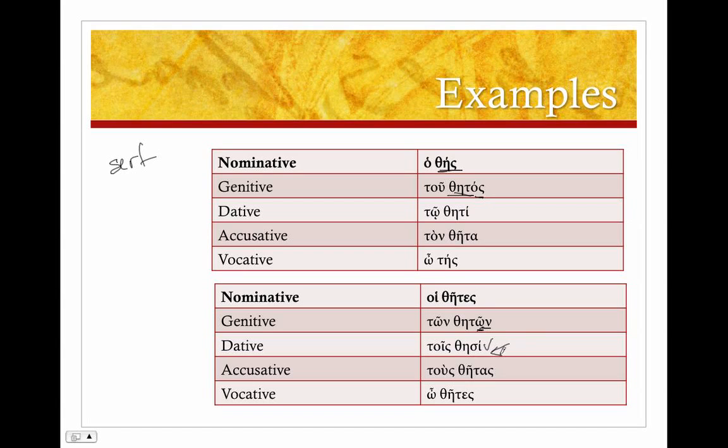So, again, the dative plural, the tau in the stem has been eaten by the sigma. Thing to keep in mind here: the same rule that in the dative plural the sigma eats the tau, and that in monosyllabic nouns, the accent is going to be on the last syllable in the genitive and dative, but on the first syllable in all the other cases.